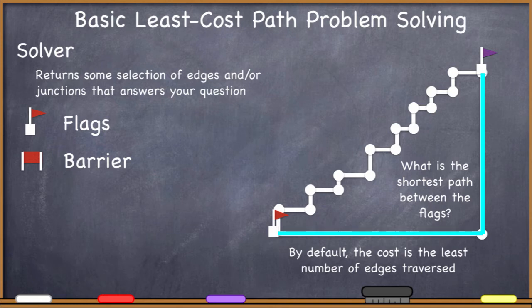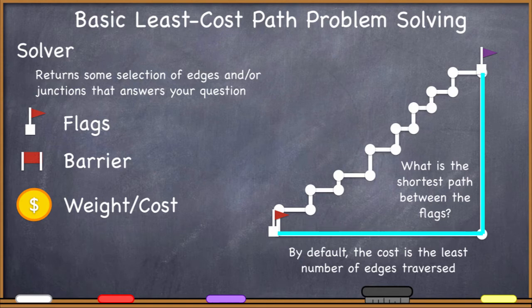So how do we fix this? Maybe we say: what I'm really interested in is not the number of edges I have to traverse — that's probably not what we expect Google Maps to give us. What I want is total distance. In order to do that, I have to introduce you to the idea of weight or cost. We need to assign a weight or a cost to these junctions and edges — essentially what it's going to cost someone if they travel along it.